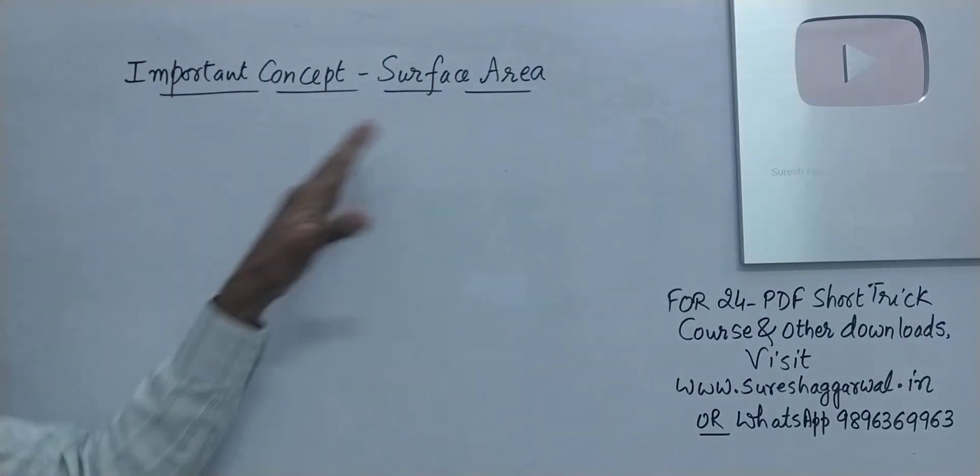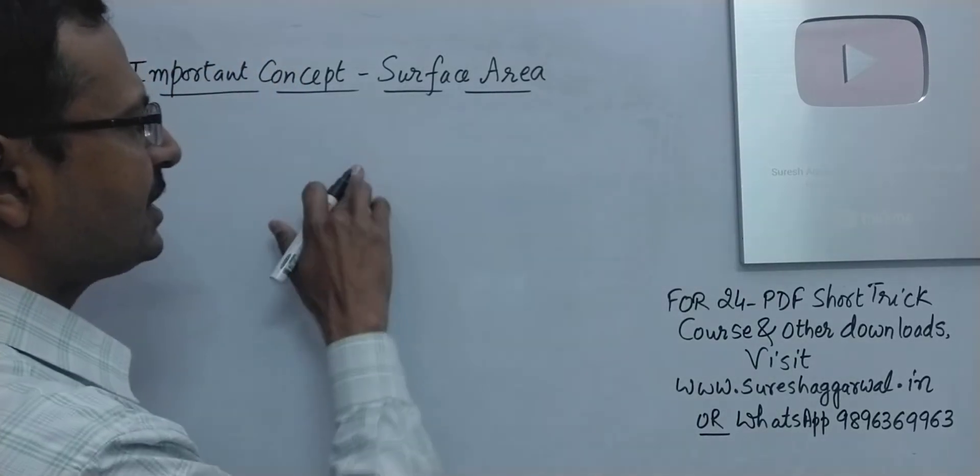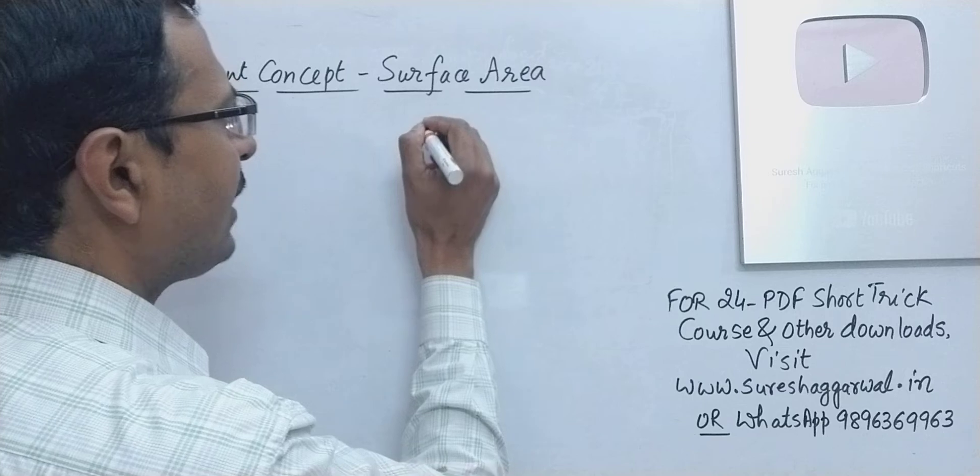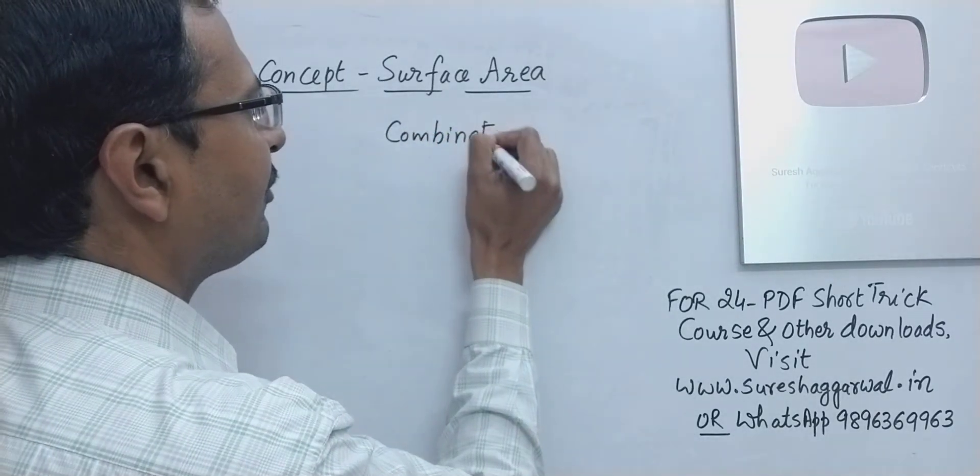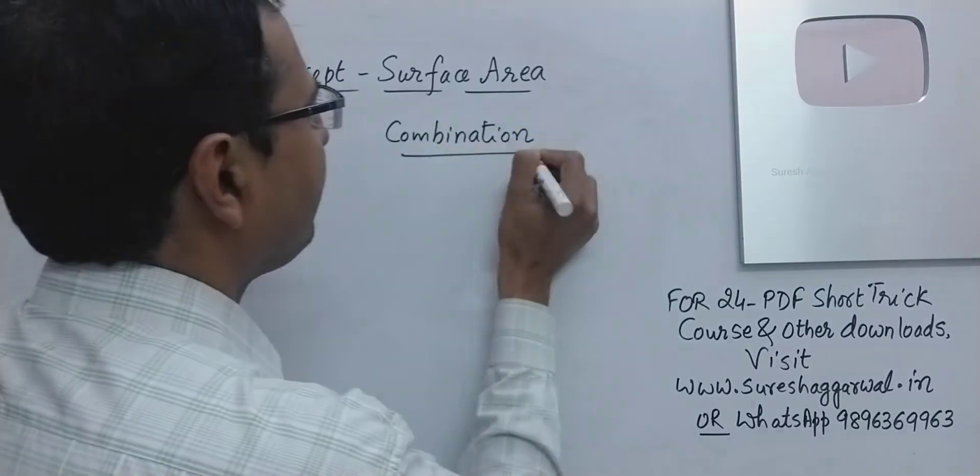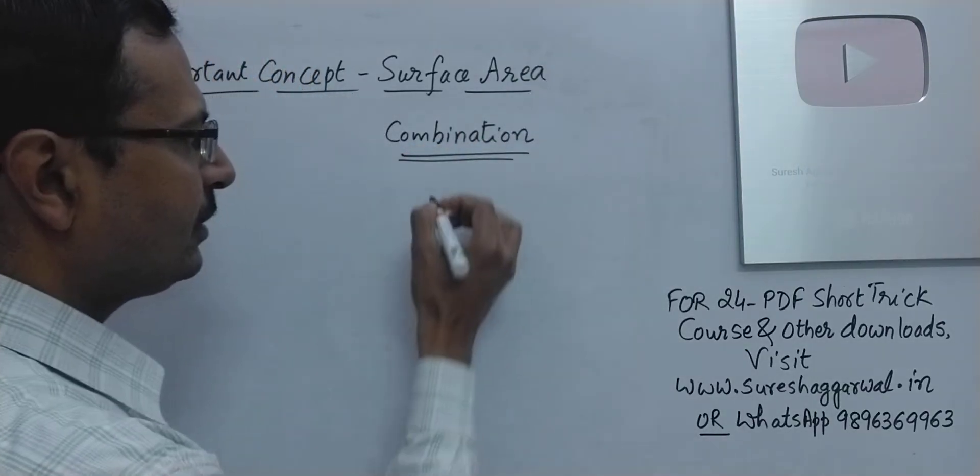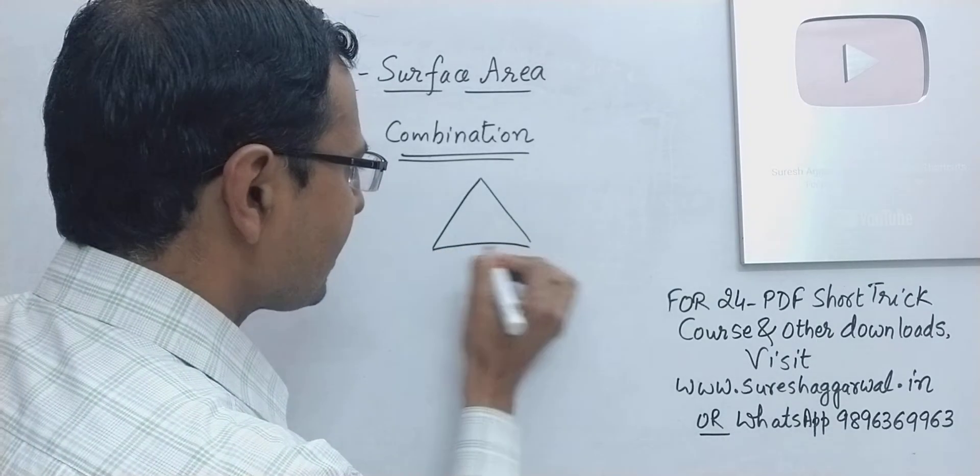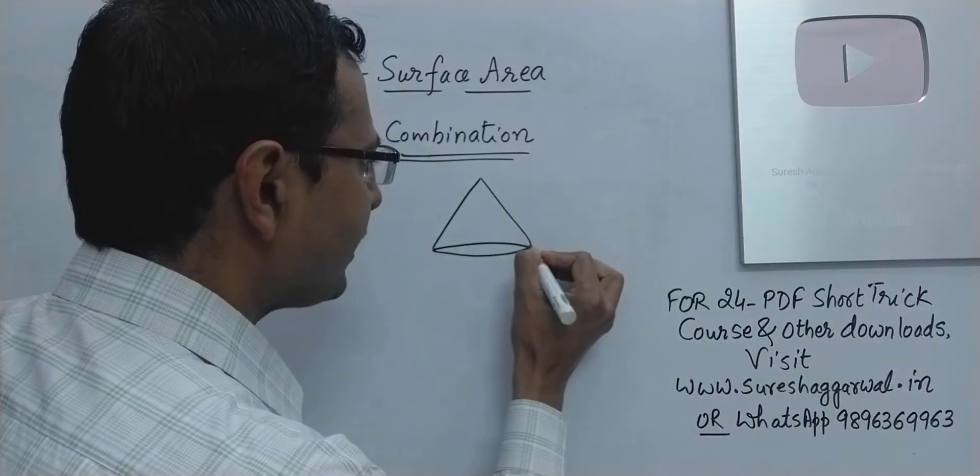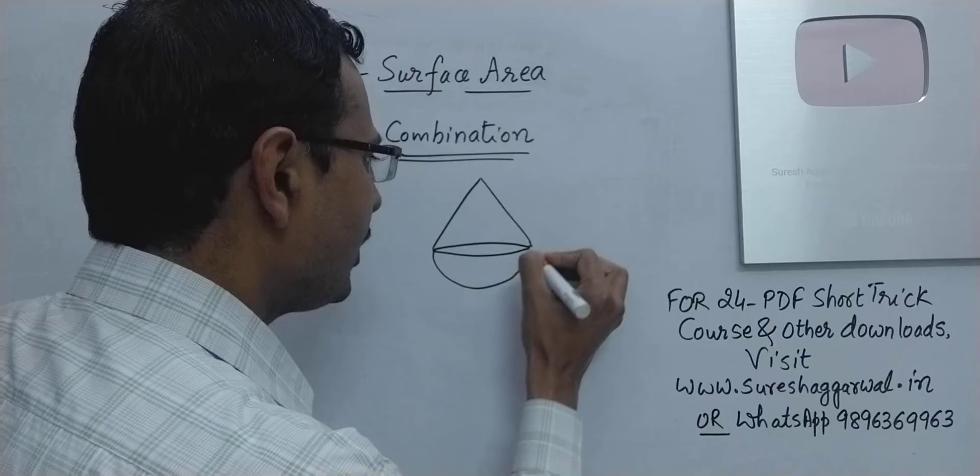Let's see this concept of surface area. The first concept is suppose you have combination of figures. When we talk of combination, normally we have two figures which are combined together. Like suppose there is a cone which is surmounted on a hemisphere. So this cone is surmounted on this hemisphere.